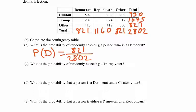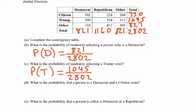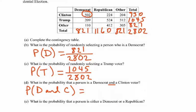The probability of selecting a person that is a Democrat and a Clinton voter: they must be in both categories — Democrat and Clinton voter. You hone in on that one cell at the intersection. That group is 502 out of the total survey of 2,802.